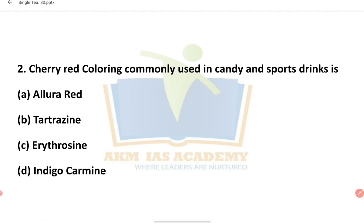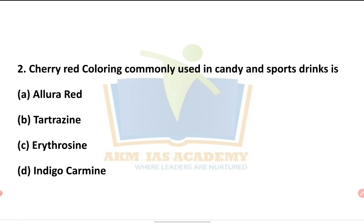Next question: cherry red coloring commonly used in candy and sports drinks is which of the following? Options are: Allura red, tartrazine, erythrosine, and indigo carmine. This question comes from adulteration and coloring compounds. Both Allura red and erythrosine are red coloring compounds.